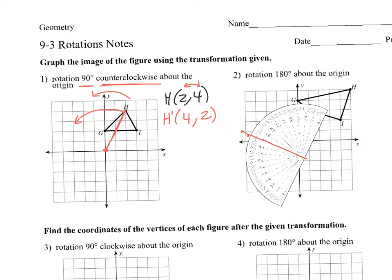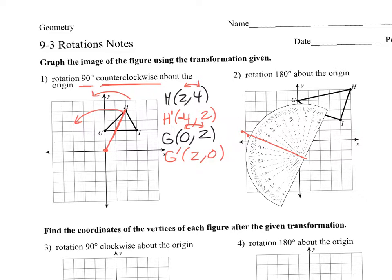So you switch the X and Y, and then we think about — that's quadrant 2 — the X is negative. So that's how that happens. What about the point G? The point G has coordinates 0, 2. So what do you do? You switch the X and Y, so now that becomes 2, 0. And remember, the X coordinate in that second quadrant is going to be negative.